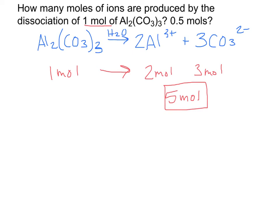Don't forget your equation coefficients just represent the ratio between them. Originally we have one mole of aluminum carbonate and end up with two moles of aluminum ions.